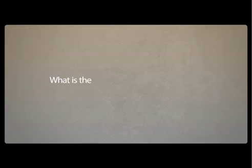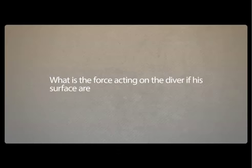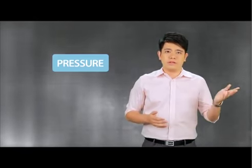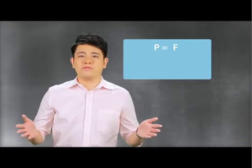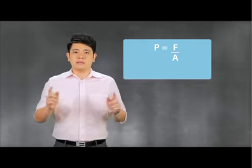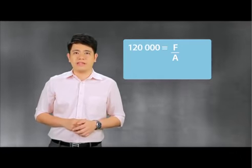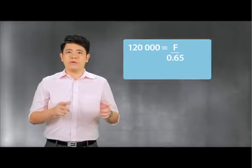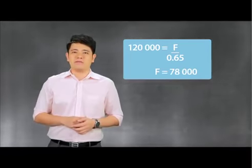Sometimes a follow-up question will be given: what is the force acting on the diver if its surface area is 0.65 meters squared? Since you have pressure and area, you need to find force. Use the formula pressure equals force over area. Substitute P with 120,000 and A with 0.65 — that gives you force at 78,000 newtons. Remember, you need to write units for all answers, or you will lose marks for no reason.